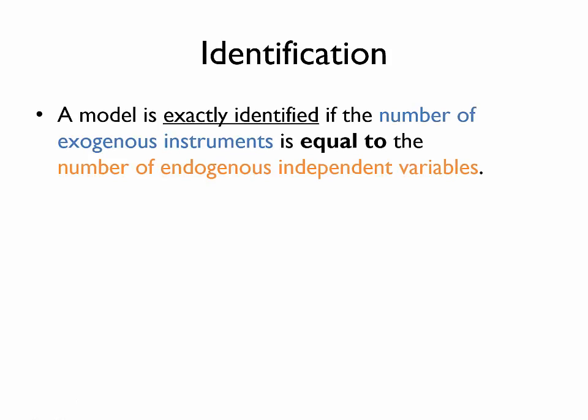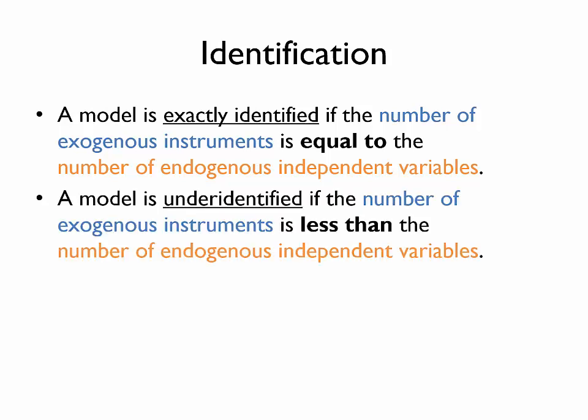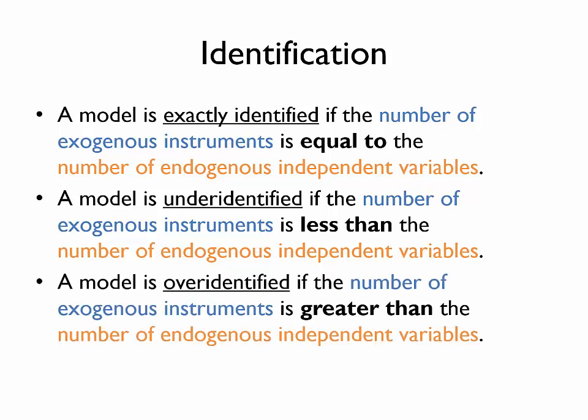A model is exactly identified if the number of exogenous instruments is equal to the number of endogenous independent variables. A model is under-identified if the number of exogenous instruments is less than the number of endogenous independent variables. And a model is over-identified if the number of exogenous instruments is greater than the number of endogenous independent variables.